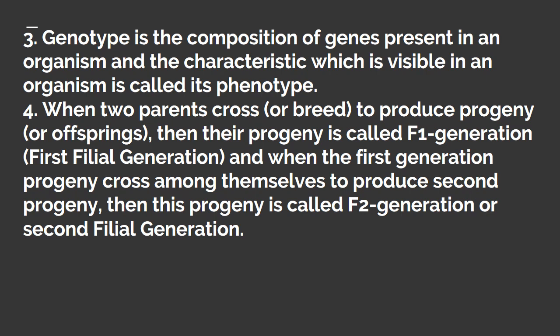When two parents cross, or breed, to produce progeny or offsprings, then their progeny is called F1 generation, or first filial generation. When the F1 progeny cross among themselves to produce a second progeny, then this progeny is called F2 generation or second filial generation.